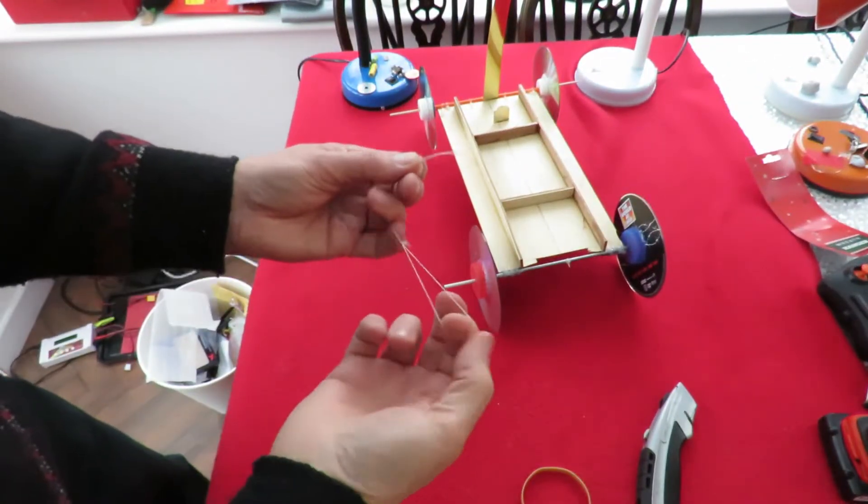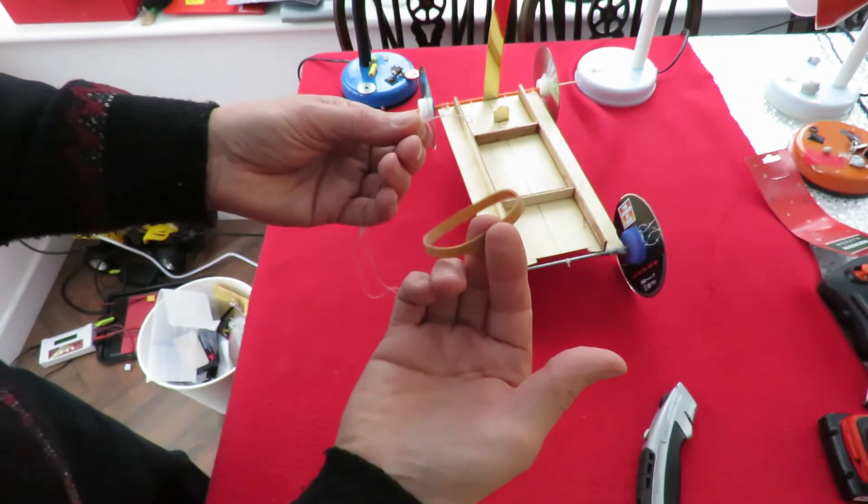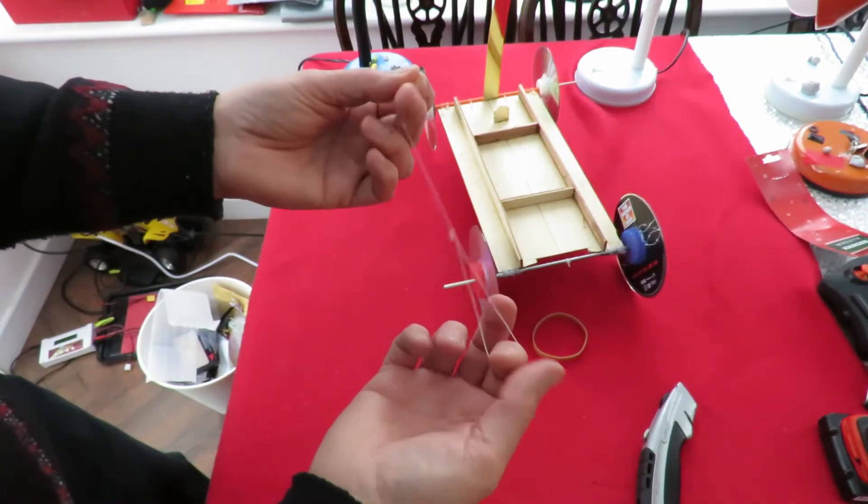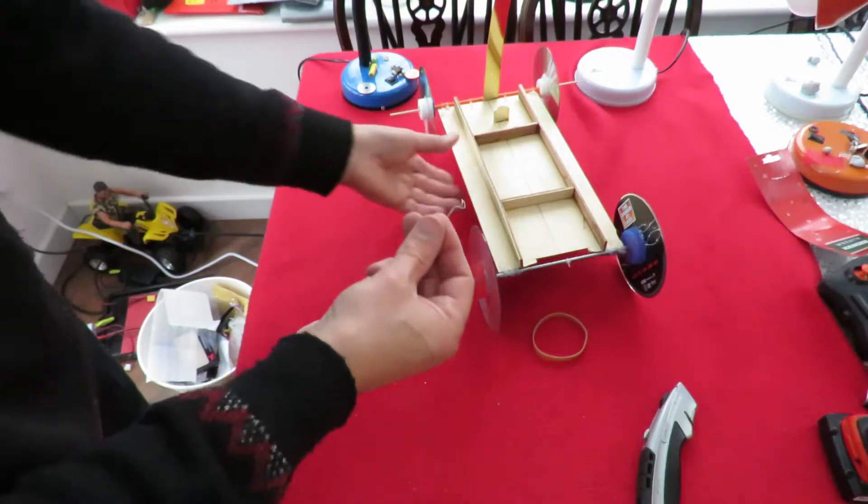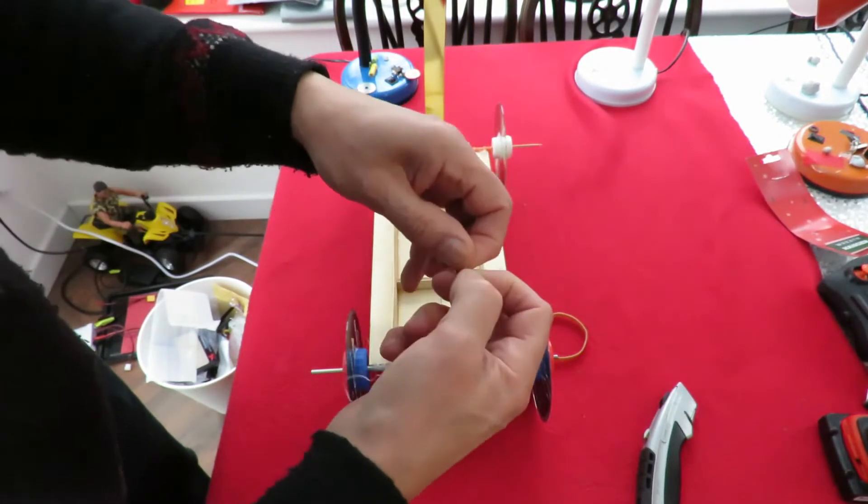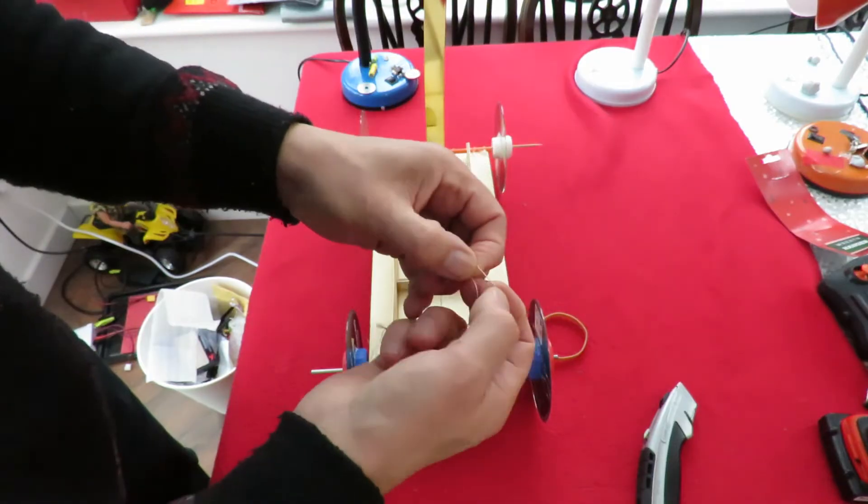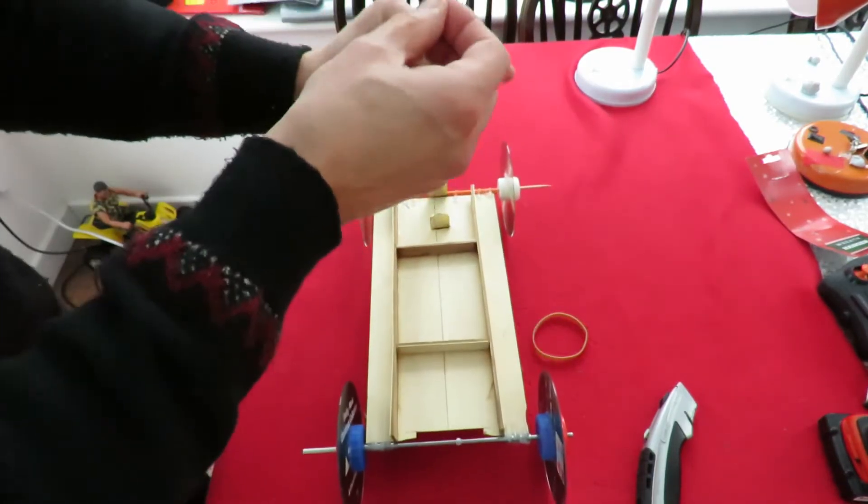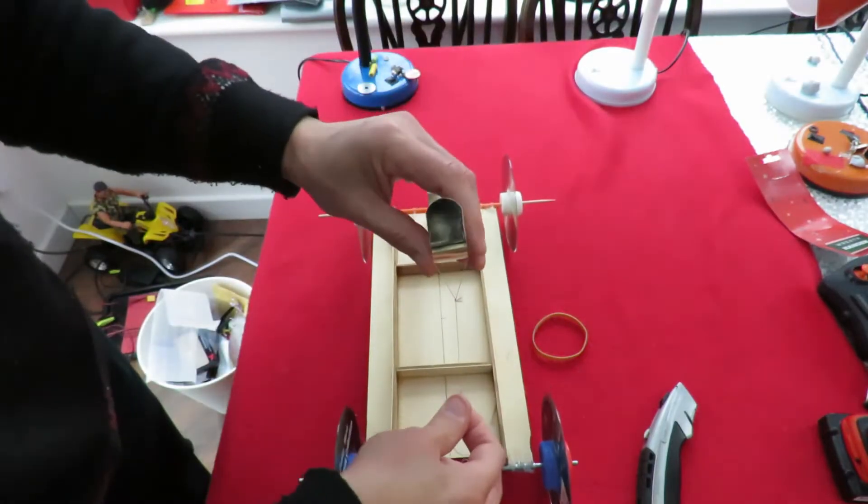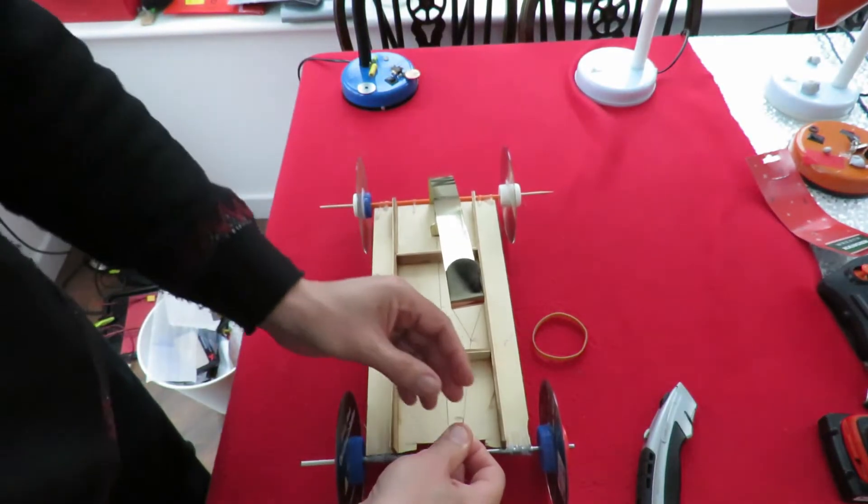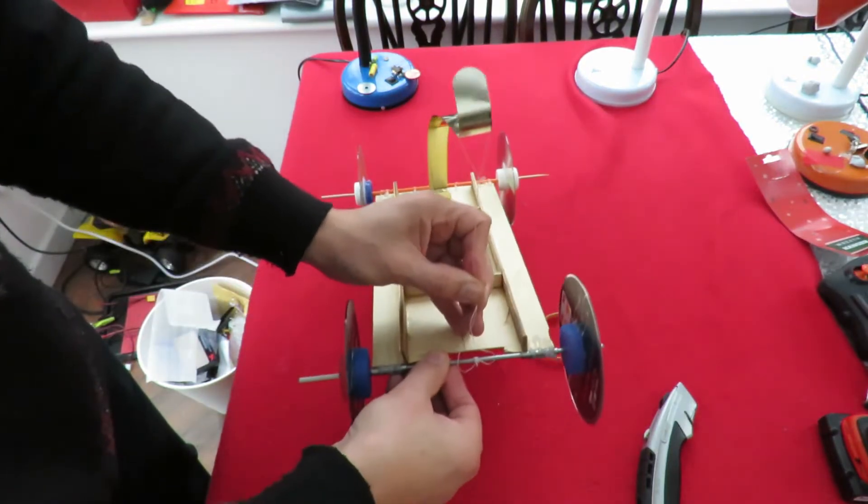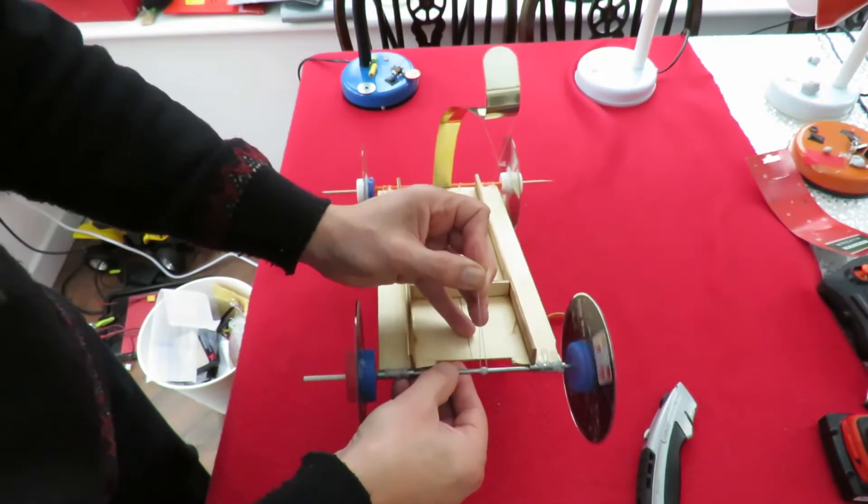With a bit of luck we can use that same bit of string that I had on the rubber band. It's just a piece of kite string. So if we just open that out again. Hook it over there. Might need to put a bit of tape on it to stop it sliding down. Hook that over that hook.